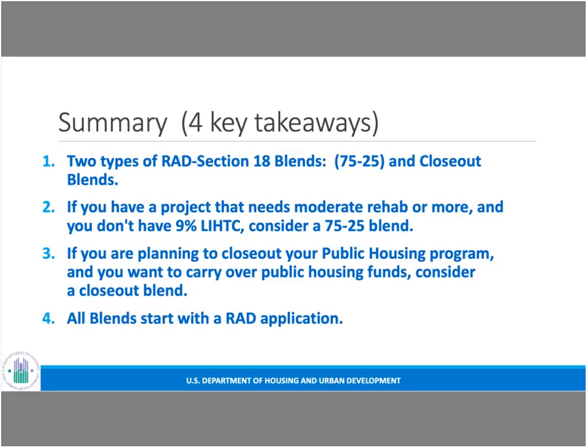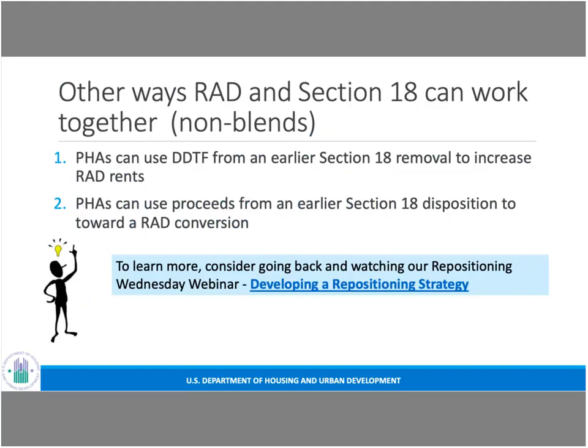Four key takeaways: We have two types of blends — the 75/25 blend and the closeout blend. If you have a project that needs moderate rehab or more and you don't have nine percent tax credits, consider the 75/25 blend and run the numbers to see if blending in regular project-based vouchers gets you there. If you're planning to close out your public housing program, have over 50 units, or want to carry over public housing funds, consider a closeout blend. All blends start with a RAD application, and we maintain a single point of contact with the PHA.